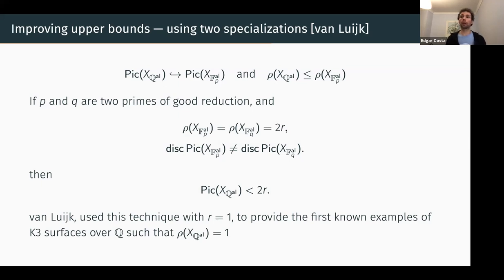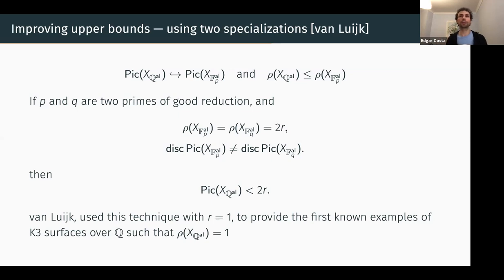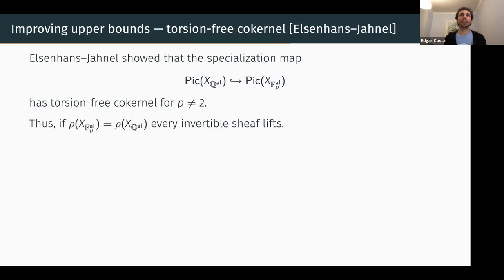Bjorn Poonen is pointing out that he was the first to write down explicit examples, but we knew that they existed — yes, I agree with that. But for me, I need to see equations. Another method to improve the inequality is trying to study better the specialization map. What Elsenhans and Jahnel did is that they showed that the specialization map has torsion-free kernel, which means every invertible sheaf lifts.